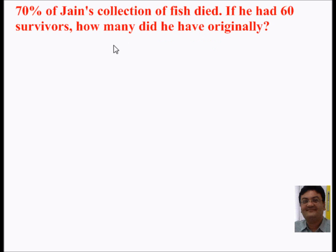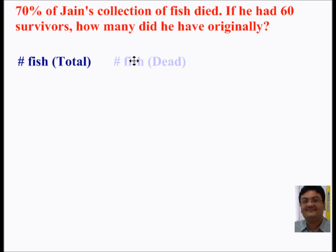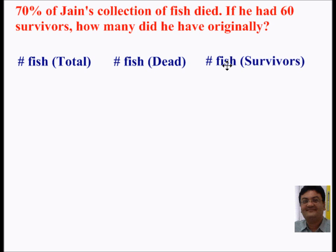Now here we have three headings. The first one will be the total number of fish. The second will be the fish which are dead, the number of fish. And the third one will be the number of fish which are survivors.